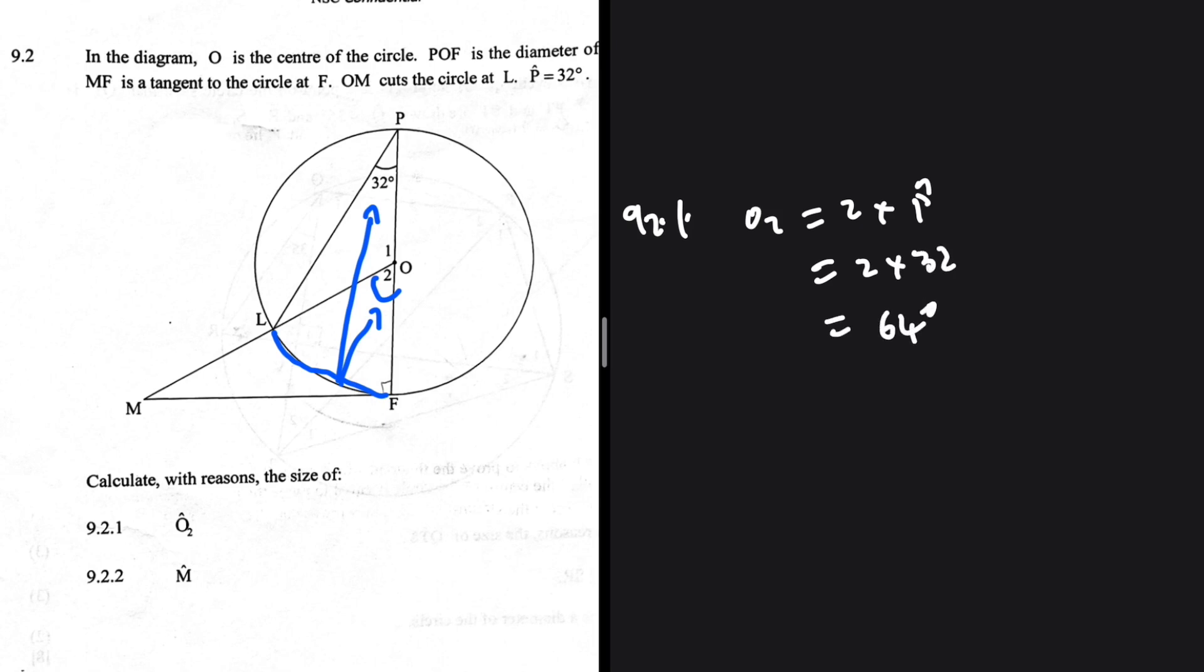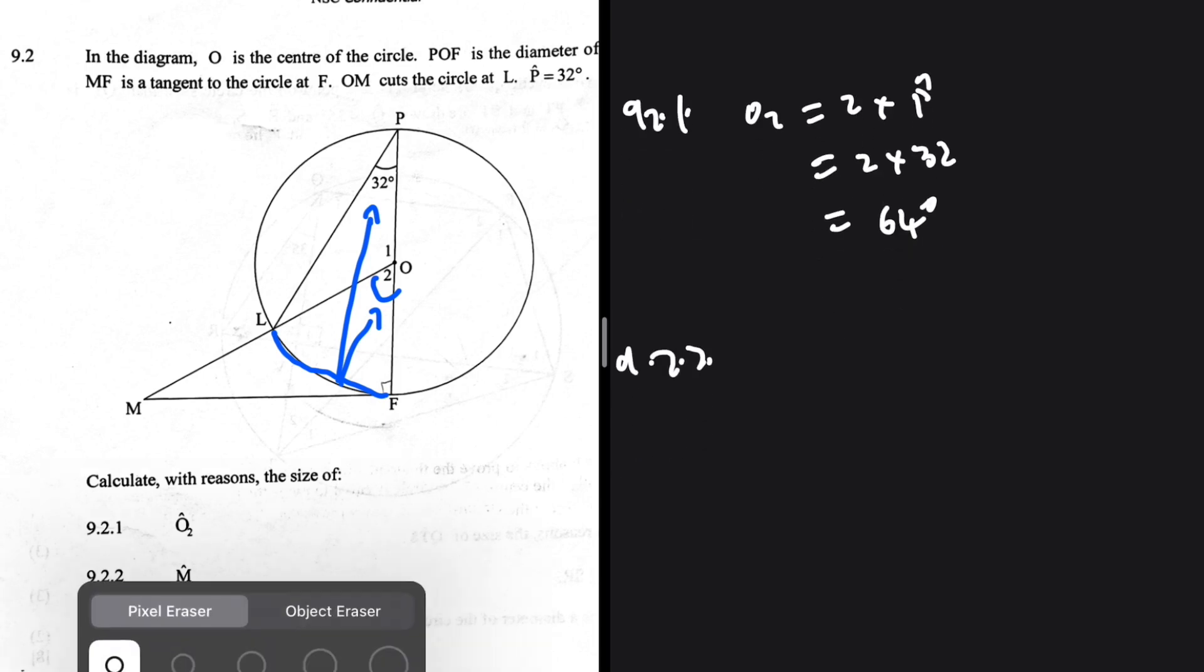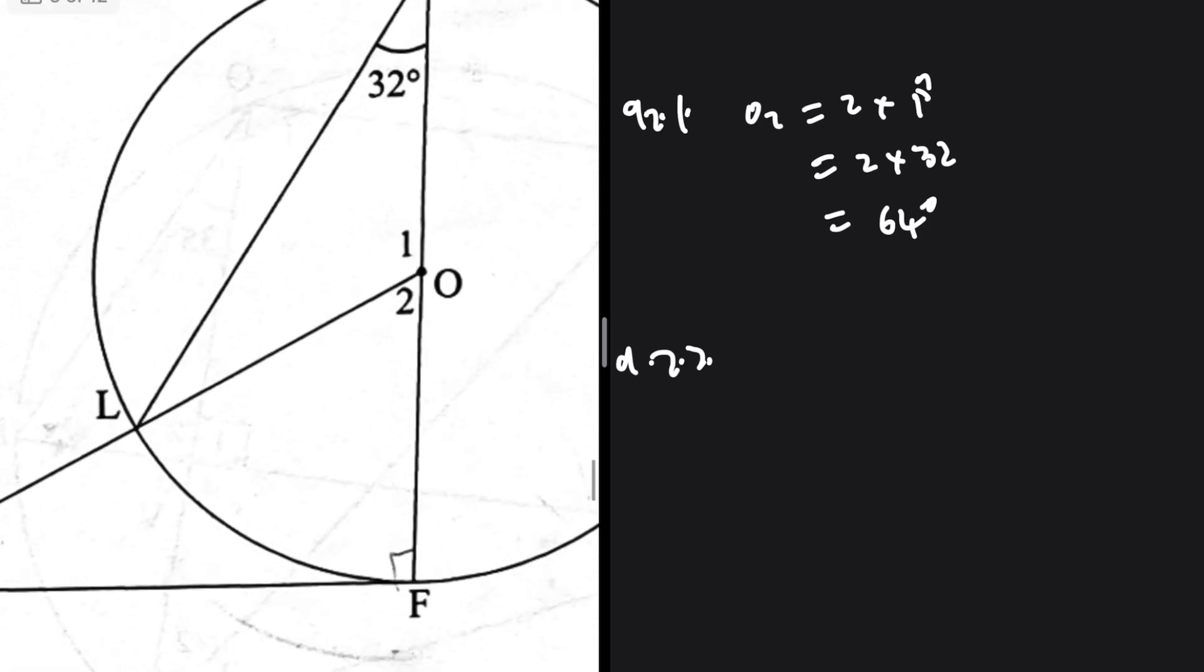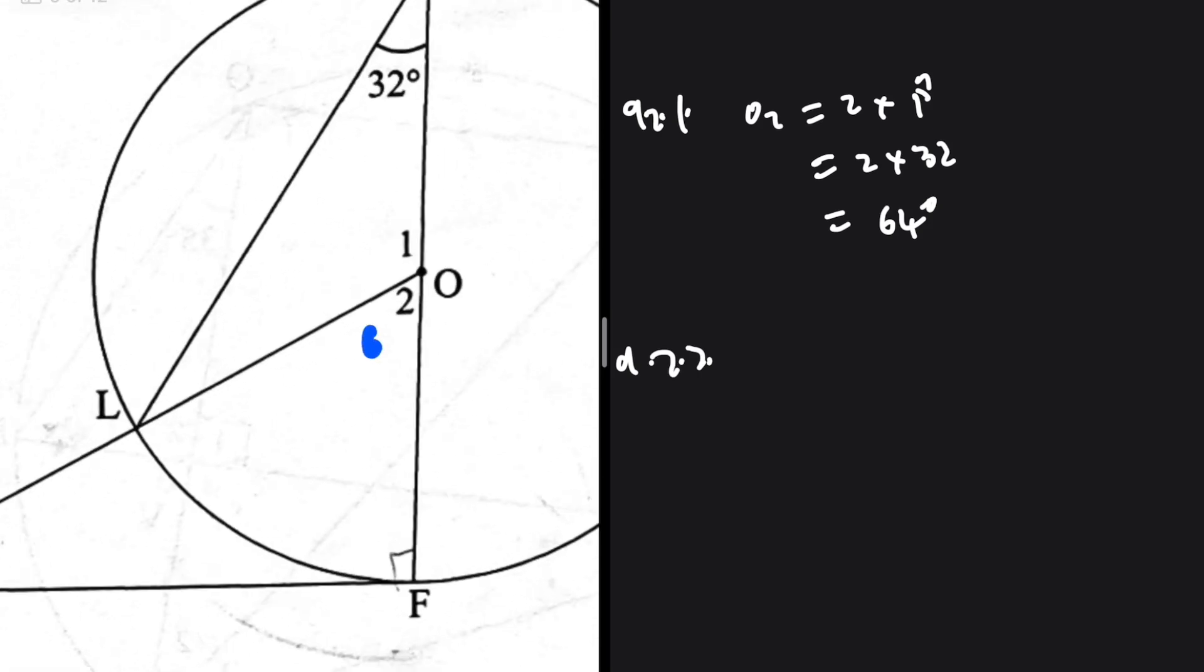Let's take a look at 9.2.2. So 9.2.2, calculate with reasons the size of angle M. So let's just erase all this, and then the only thing that we're adding is that O2 is 64.